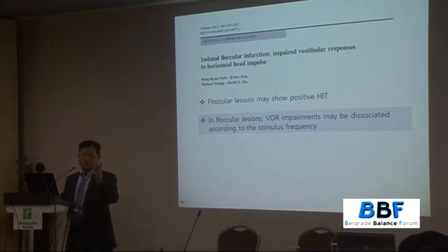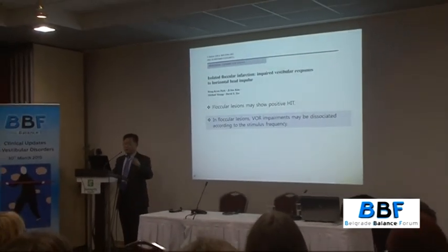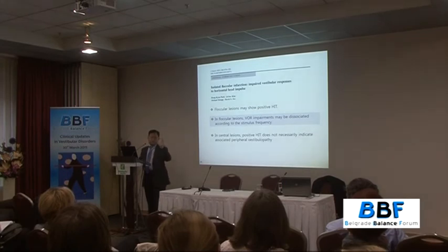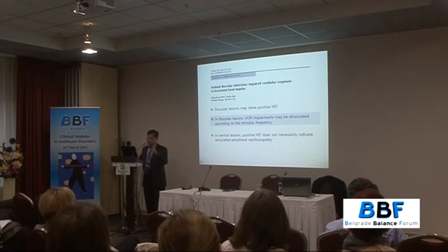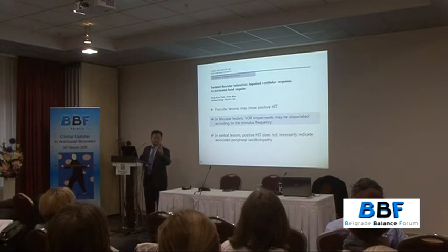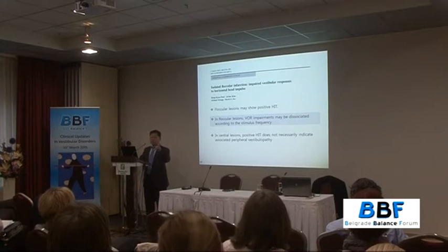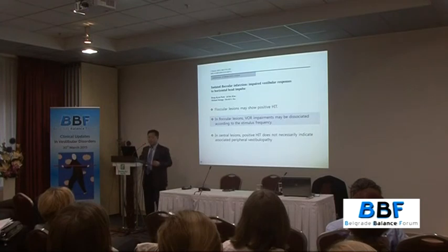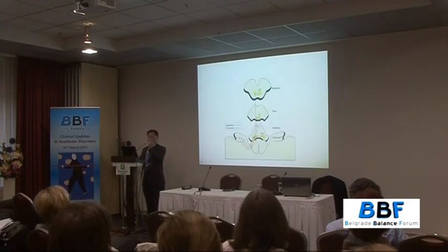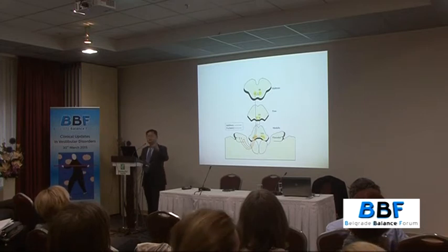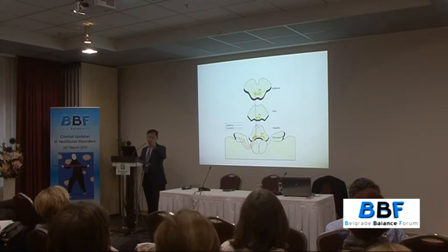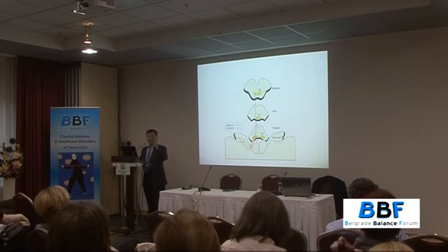The VOR impairments may be dissociated: abnormal during head impulse test, normal calorics, and increased gain during the rotatory chair test. The key message is that central lesions can also show an impaired head impulse test, and a positive head impulse test doesn't necessarily indicate combined peripheral vestibulopathy — especially when the corrective saccades are very subtle. In central lesions the impairment is not as large as observed in peripheral vestibulopathy. We believe the flocculus is involved in augmentation of the VOR only during high-acceleration stimuli.